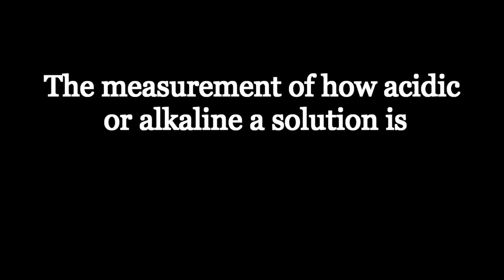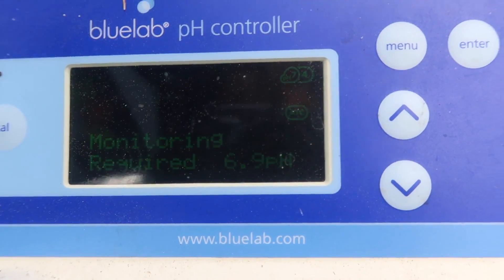pH is defined as the measurement of how acidic or alkaline a solution is. When dealing with pH, we're dealing with the amount of hydrogen ions (H+) compared to hydroxyl ions (OH-). When you have an equal amount of hydrogen and hydroxyl ions, you have a balanced pH of seven. When you have more hydrogen ions than hydroxyl ions, the pH drops — you're adding more acid. When you have more hydroxyl ions, the pH increases above seven.